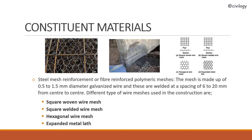The mesh is made up of 0.5 to 1.5 mm diameter galvanized wire, welded at a spacing of 6 to 20 mm center to center. Different types of wire meshes used in construction are: square woven wire mesh, square welded wire mesh, hexagonal wire mesh, and expanded metal lath. These are the different types of wire meshes used in ferrocement construction.